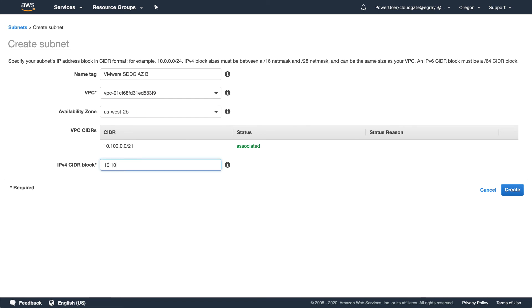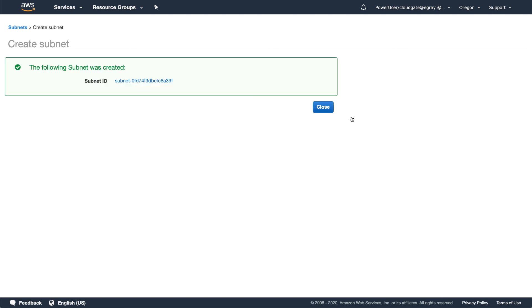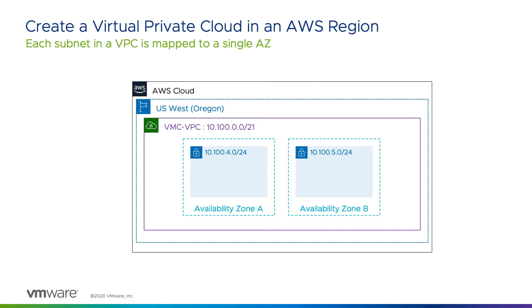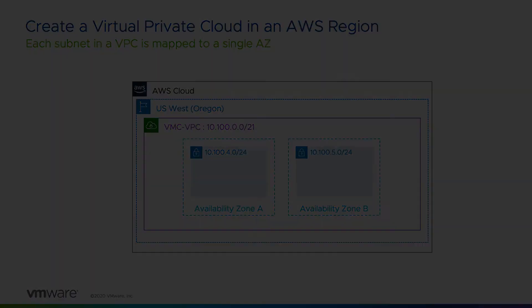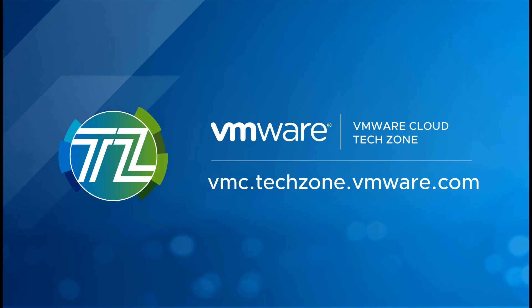Workloads running on your VMware Cloud on AWS SDDC will be able to route to any of the other subnets that use the main VPC route table. Now that you've planned your IP address allocations and created a VPC with one or two subnets, your AWS infrastructure is ready for a new VMware Cloud on AWS SDDC deployment. In the next segment, we'll show you how to get started with the service. Be sure to visit VMware Cloud Tech Zone for the latest VMware Cloud on AWS resources.